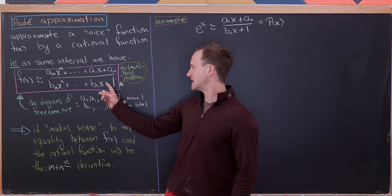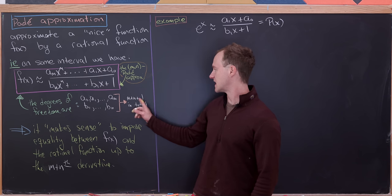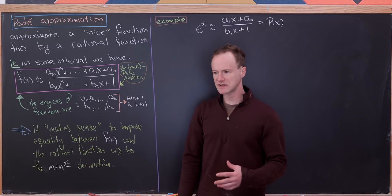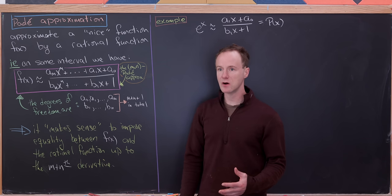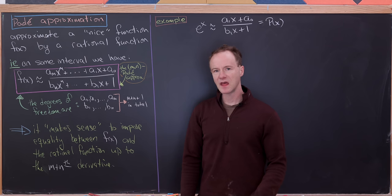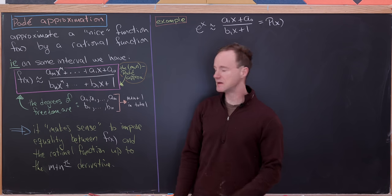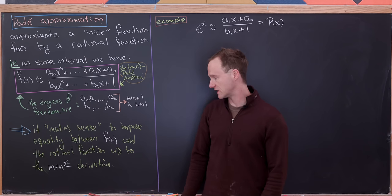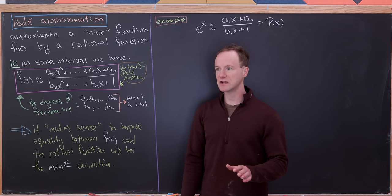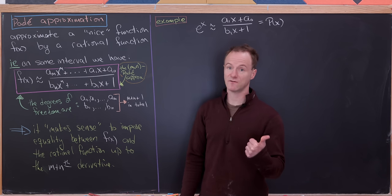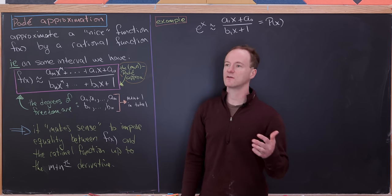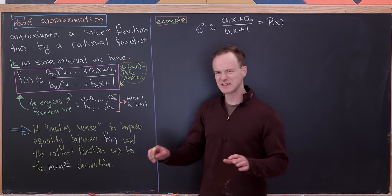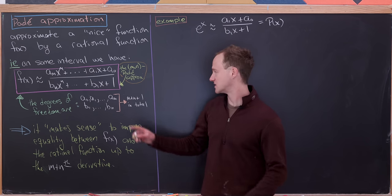Inside this rational function there are m + n + 1 total degrees of freedom — those coefficients. That gives us the ability to impose m + n + 1 equations, and the natural way to do that is to impose equality between f(x) and the rational function up through the (m+n)-th derivative. We impose equality for the zeroth derivative (the function value), then the first, second, third, all the way up to the (m+n)-th — giving m + n + 1 total equations.